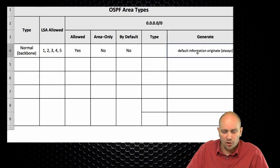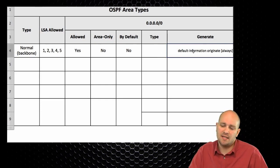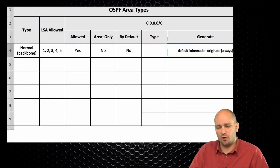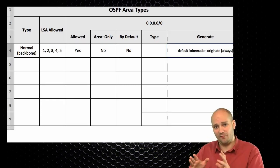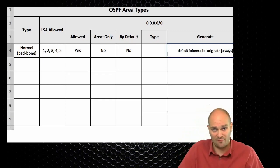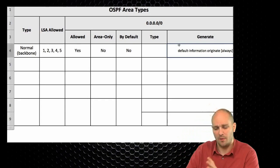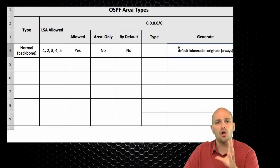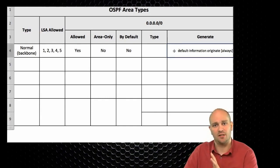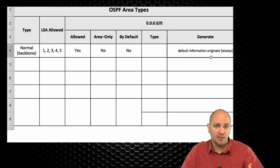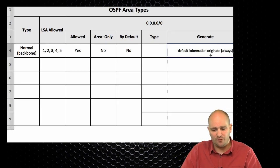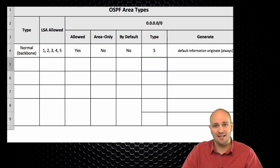When configured in the OSPF process, the router checks its routing table for an existing default route. If one exists from any source, it gets implicitly redistributed into OSPF as external routing information. If no default route exists in the routing table, nothing gets inserted. To inject the default route regardless, use the 'always' keyword. With 'default information originate always', OSPF generates the default route as a type 5 LSA.